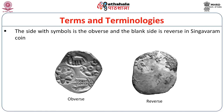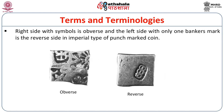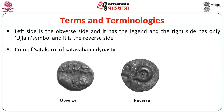For better understanding: in the Singavaram punch-marked coin of the Andhra region, the side with symbols — elephant and six-star symbol — is the obverse, and the blank side is the reverse. In imperial punch-marked coins, the side with symbols is obverse and the side with only one banker's mark is reverse. Coins of Satakarni of the Satavahana dynasty have the legend on the obverse and a symbol on the reverse.